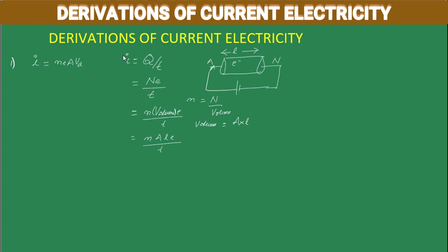We can write this as NeA times L by T. And L by T is nothing but distance by time, which is velocity — in this case, drift velocity. Therefore, I is equal to NeAVd. This is the first derivation in current electricity.